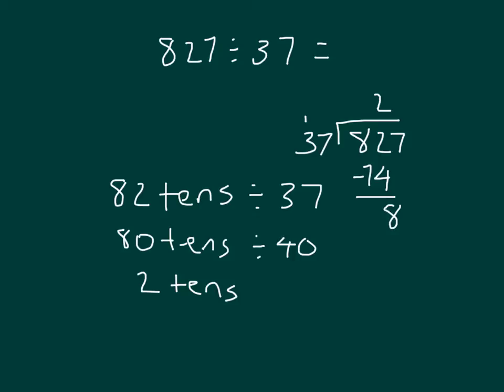Could we make another group of 37 out of that 8? No, we can't. And then remember, that was worth 8 tens. So we bring down the 7, so now we're working with 87 ones. And then we are able to work with those 87 ones, and also divide it again, in this case by 37.